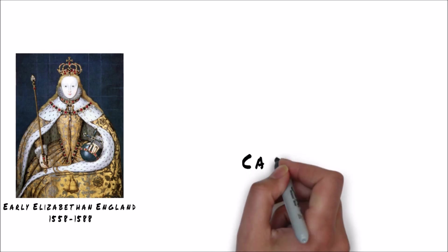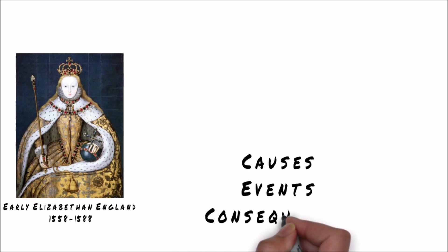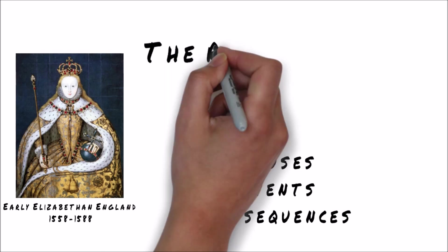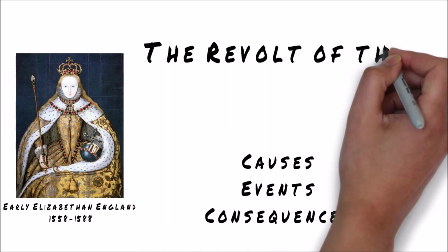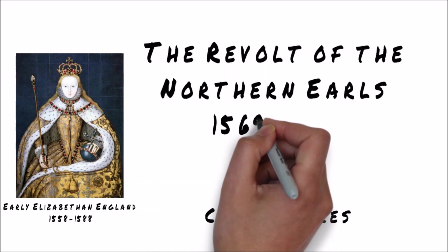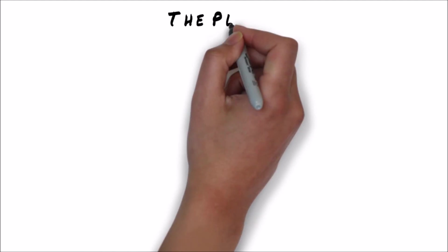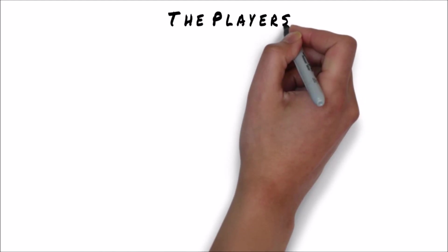In this video we're going to have a look at the causes, consequences and events of the Revolt of the Northern Earls, which took place in 1569-1570. We need to start by introducing the main players in this event.